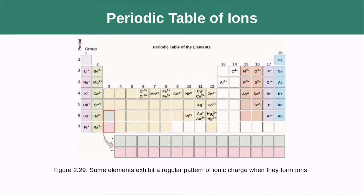Looking at this visually, lithium wants to lose one electron to have the same number as helium. Sodium wants to lose one to be like neon. On the other side, oxygen wants to gain two electrons to be like neon, and chlorine wants to gain one to be like argon. The transition metals are pretty much unpredictable — we really don't know what charges we'll find on those.